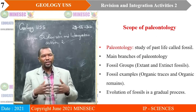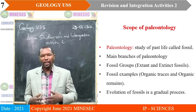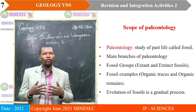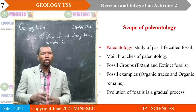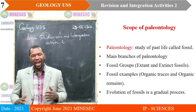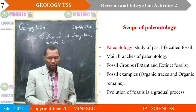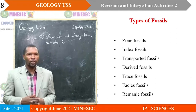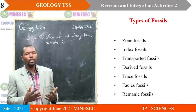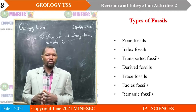The different examples of fossils include organic traces, which are just impressions, and organic remains, which are referred to as true fossils. We also saw evolution of fossils — a gradual process that evolves from simple to complex forms. As rocks become younger, the fossils become more complex. The different types of fossils included zone fossils, index fossils, transported fossils, derived fossils, trace fossils, fasciae fossils, and ramine fossils.